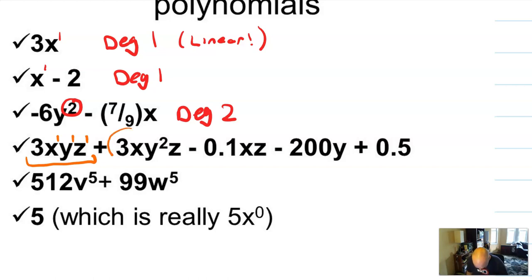but you then add the exponents of the variables because they're multiplied together. So that would be a degree 3 term. But wait, there's more. Look at this second term. This has an x to the first, a y to the second, and a z to the first. So this thing is actually going to be degree 4 when you add up those terms.